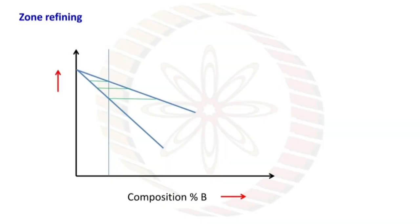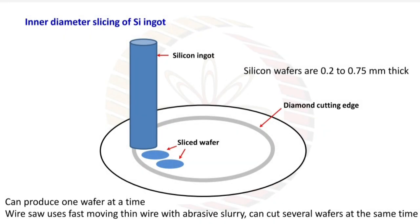Inner diameter slicing of silicon ingot. Silicon wafers are 0.2 to 0.75 mm thick. Diamond cutting edge sliced wafers can produce one wafer at a time. Wire saw uses fast moving thin wire with abrasive slurry, can cut several wafers at the same time.